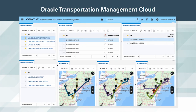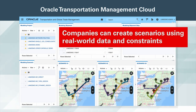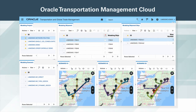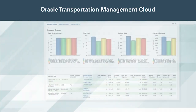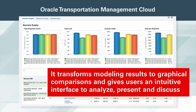Logistics network modeling provides a simple and intuitive way to perform strategic and tactical transportation analysis. Companies can create scenarios using real-world data and constraints, leading to highly accurate results showing the actual impact of the changes to operations. Results of multiple simulations can be viewed side-by-side for comparison. Logistics network modeling delivers powerful data visualization through prepackaged sample dashboards and user-defined metrics, transforming modeling results to graphical comparisons with an intuitive interface to analyze, present, and discuss.